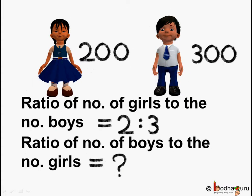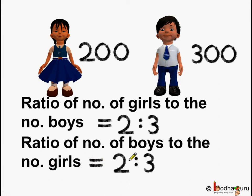We can say the ratio of number of girls to the number of boys is equal to 2 is to 3. Now we know this ratio is 2 is to 3. So what is the ratio of number of boys to the number of girls? Can we find it out? Is it also 2 is to 3?